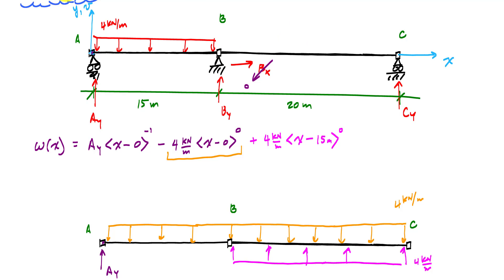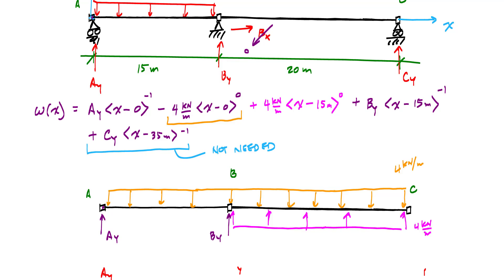And then I have the concentrated load By. So plus By times X minus 15 meters to the negative one. And that's going to give me the By. And then I could add the Cy plus, I'll put it down here, plus Cy times X minus 35 meters to the negative one. But I'll tell you right now, this term will never come into play. It will always be zero for any value of X. This last term is technically not needed. So we have our loading function.